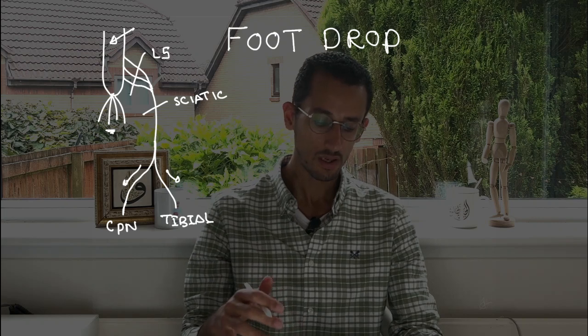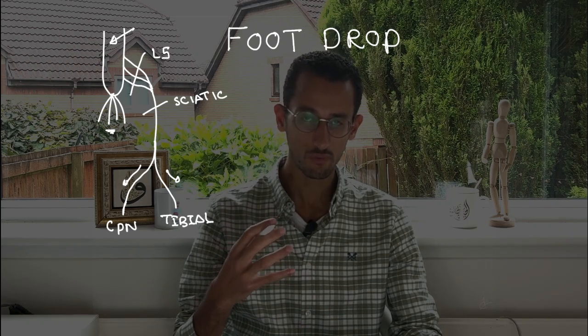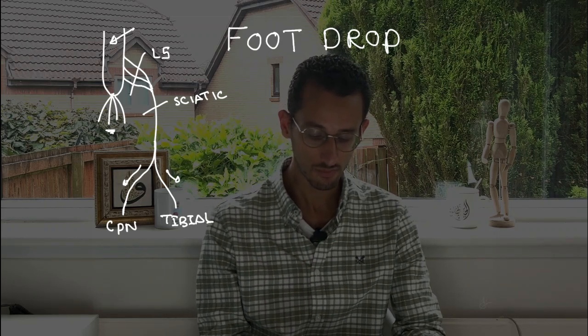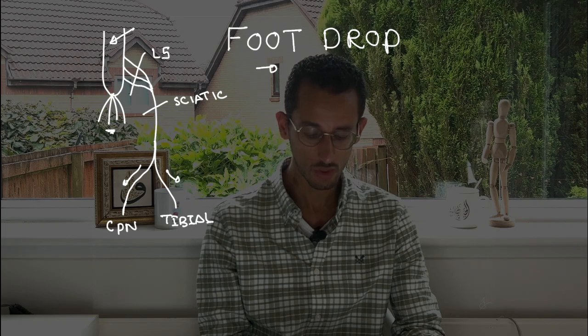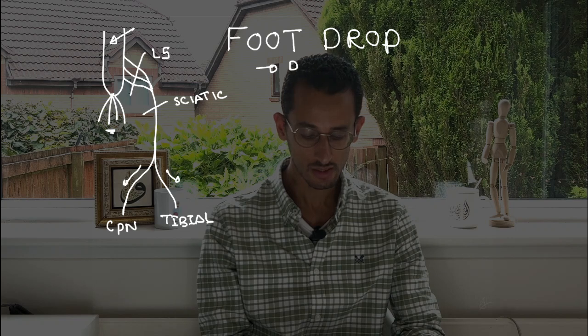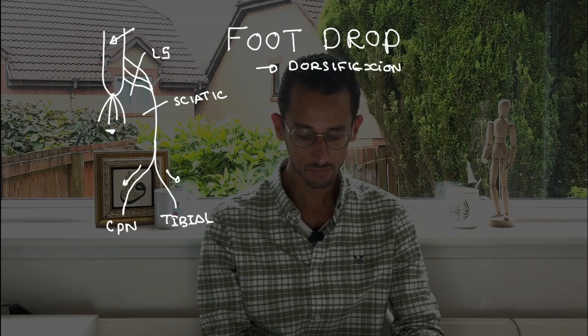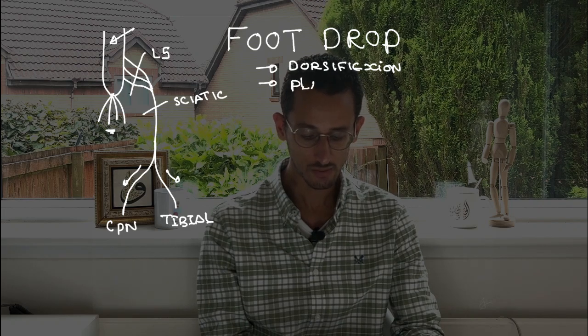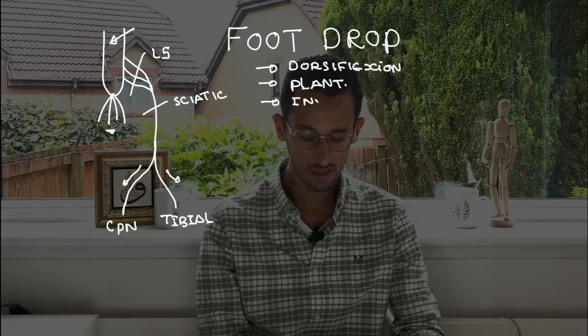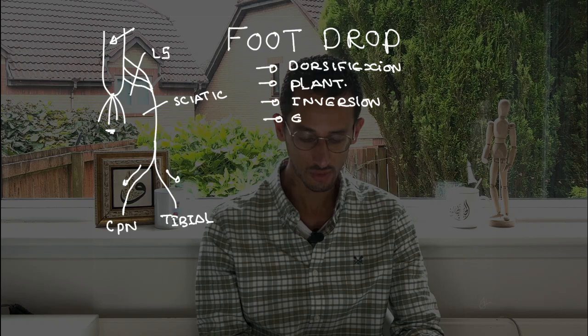Before we jump into what's the function of each one of those, let's talk about the function of the foot, or what possible movements can be done by the foot. So if we think about the foot, it can do four main directions or four main functions. The first one is the dorsiflexion of the foot, and then we have the plantar flexion, and then the foot can do inversion and also can do eversion.